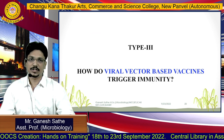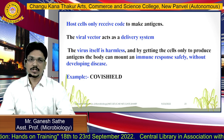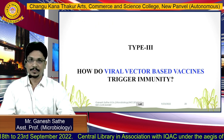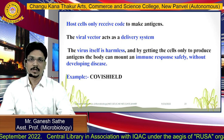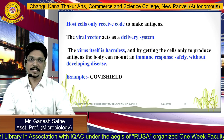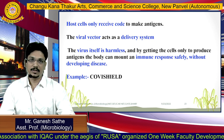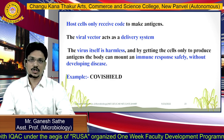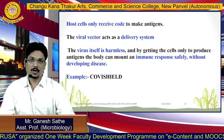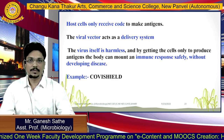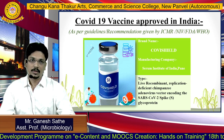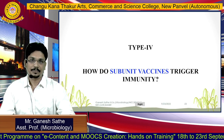Can viral vector based vaccine trigger immunity? Yes. Covishield, which is approved by the government of India, is one type of this vaccine. Here we are using a vector virus which is modified by integrating the spike protein of the COVID-19 causing coronavirus. After administration, they will provide immunity and are not responsible for causing disease. The example produced by the Serum Institute, Pune, is administered to the overall population of India.